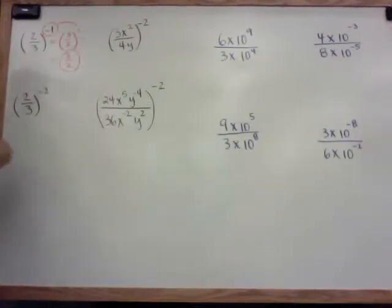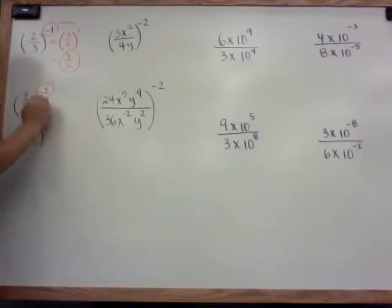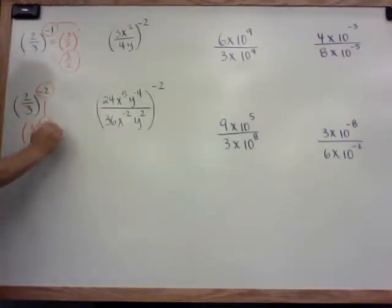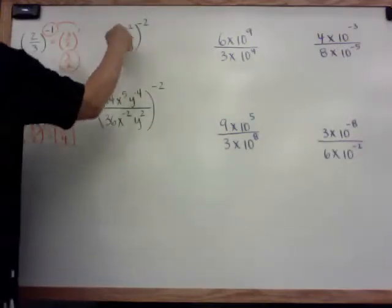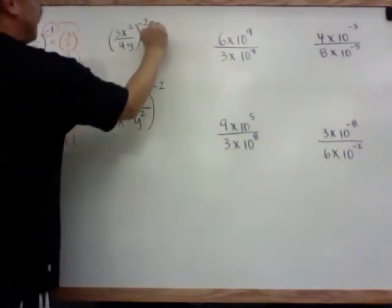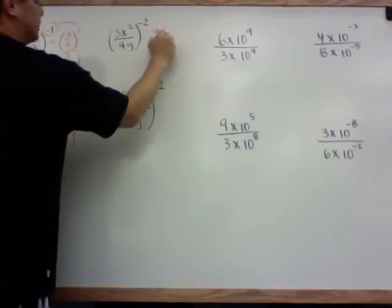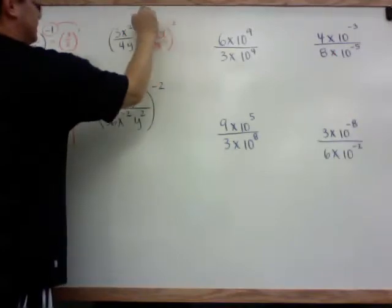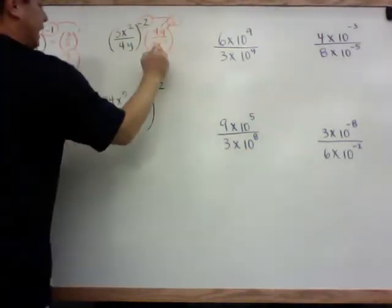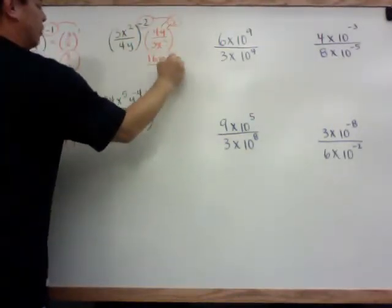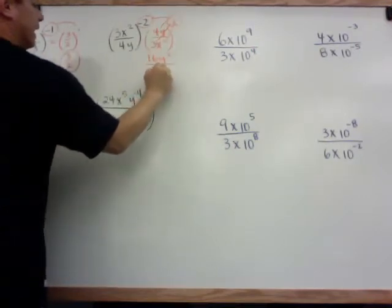If I have a negative 2 here, what I want to do is flip it over. So 3 over 2, change it, and change this negative to a positive 2. Now I distribute it in and I get 3 squared over 2 squared, which is 9 over 4. Same thing here: when you flip it, you want to make sure you flip it and keep it the same. So if I flip it, I get 4y over 3x squared — leave the parentheses and change this negative 2 to a positive 2. Now I distribute it in and I get 16y squared over 9x to the 4th.